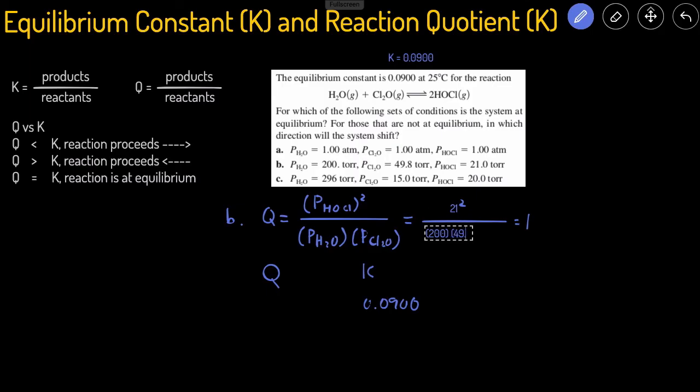times the pressure of the other reactant, Cl2O, is 49.8. Let's plug that into the calculator and see what we get for the Q value. And then that gives us 0.044.